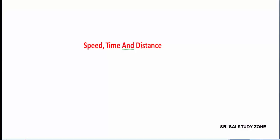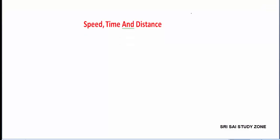Let's talk about time and distance. For a simple formula, let's talk about DTS. D is distance, T is time, and S is speed. So D is equal to time into speed.